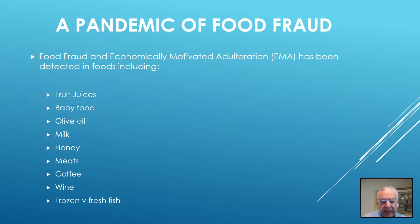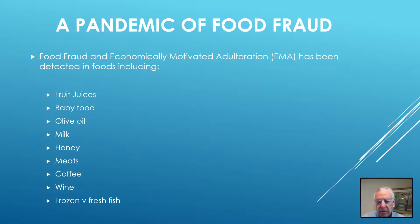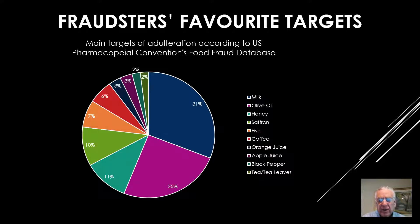During the past two decades, there has been a pandemic of food fraud, and this pandemic has been associated with economically motivated adulteration, customs fraud, label fraud, and other modes of fraud. The manifestations include a variety of products: honey, meats, coffee, wines, frozen versus fresh fish, and the list goes on. The USP's food fraud list shown in this slide describes the most prevalent foods which have been subject to adulteration.